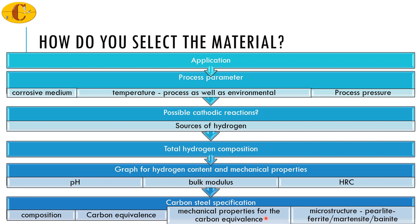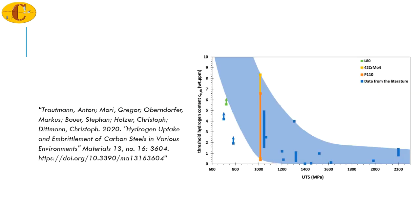Hence, it is prudent to look at the carbon equivalence and then look at all the mechanical properties to select which of them match the critical mechanical property required for your application. A small example is given here where you find the variation of the total hydrogen content with respect to the ultimate tensile strength. When we want to extrapolate or make use of this data, rather than directly going to the literature, it is better to go through the steps in the previous slide and then select the correct graph based on what the critical parameter would be.